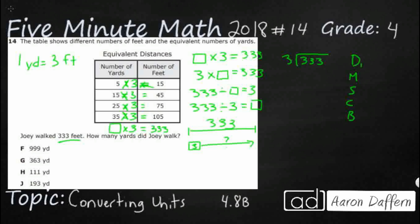I like to think of the saying, does McDonald's sell? And then the CB is cheeseburger. That's the check. And then the bring down. These are the steps for long division we learn in fourth grade.